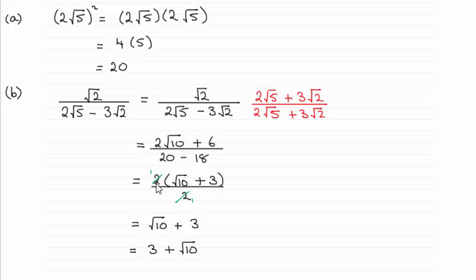You can see then that 20 take away 18 is 2. I factorize the top by pulling out a 2 so we then just divide top and bottom by 2 giving us √10 plus 3, but because we need it in the other form a plus √b I've turned it round.